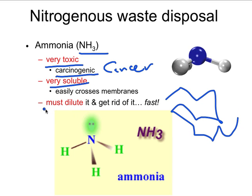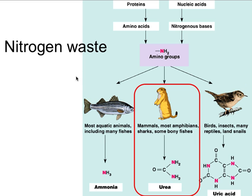We need to dilute ammonia and get rid of it as quickly as we can. Humans aren't the only ones that have to deal with nitrogenous waste. Aquatic animals deal with it using straight ammonia. We humans turn our nitrogenous waste into urea, and birds make uric acid. All of these animals have to deal with proteins and amino acids getting broken down.